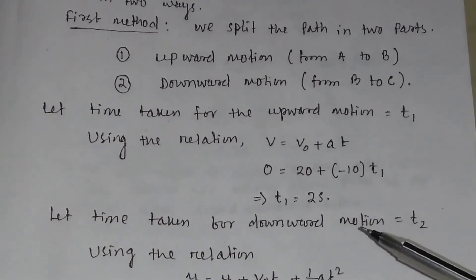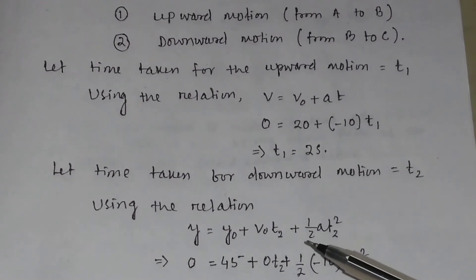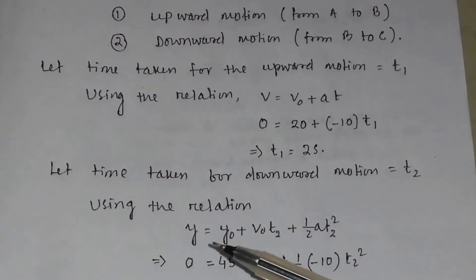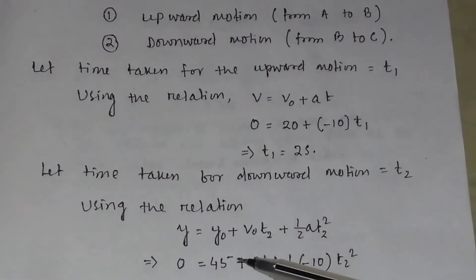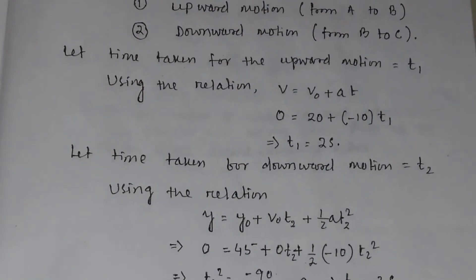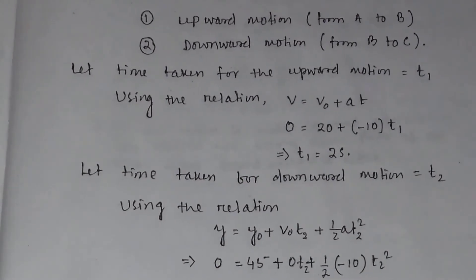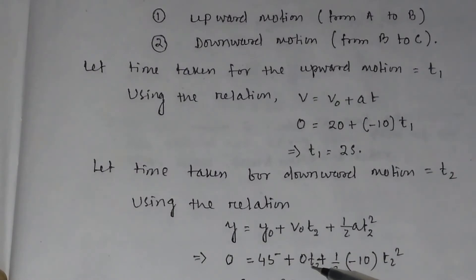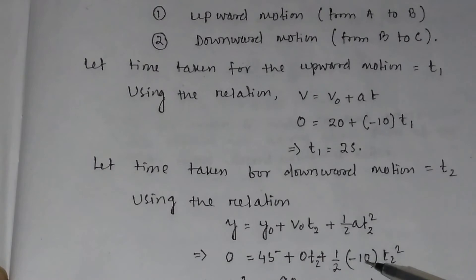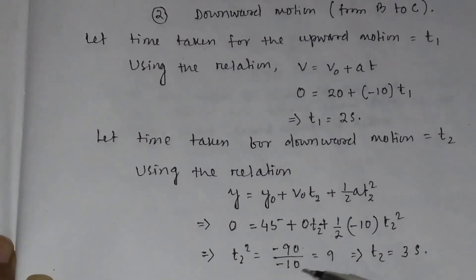Let the time taken for the downward motion from B to C be T2. Using the relation y equals y₀ plus v₀T2 plus half aT2², here the final displacement is 0 and the initial displacement y₀ equals 45 meters — that is, 25 meters from ground to the top of the building plus 20 meters from A to the highest point B. The initial velocity at the highest point in the downward motion is 0, so we get 0 plus half into minus 10 into T2 squared, and solving gives T2 equal to 3 seconds.